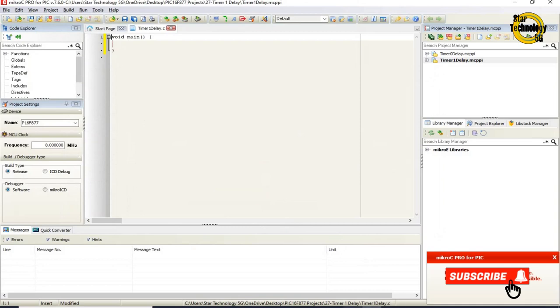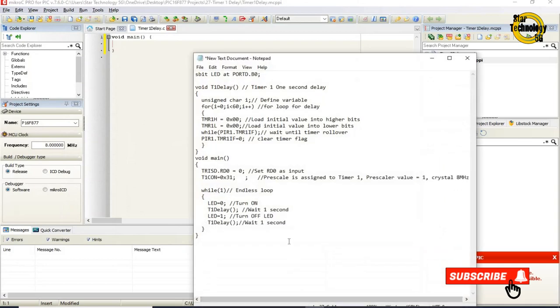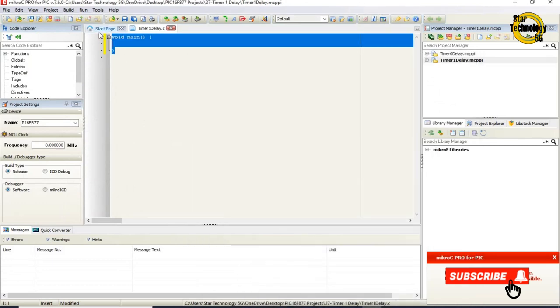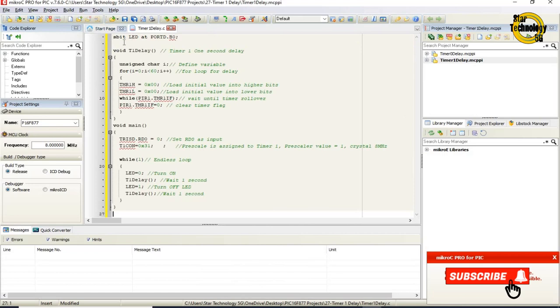Here is the window where we can write the code. I already wrote the code, otherwise the video gets very long. I will copy the code and paste it here. Now I will define the code. sbit LED at PORTD dot B0. Define LED at port D pin RD0. void T1delay, Timer 1 one second delay.